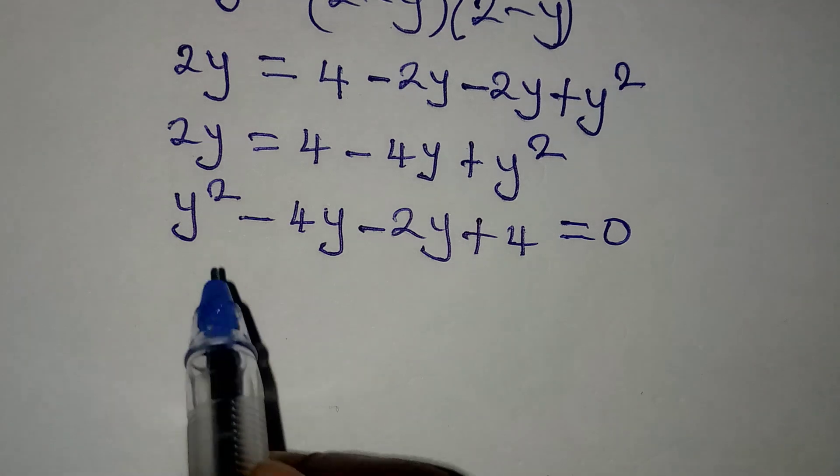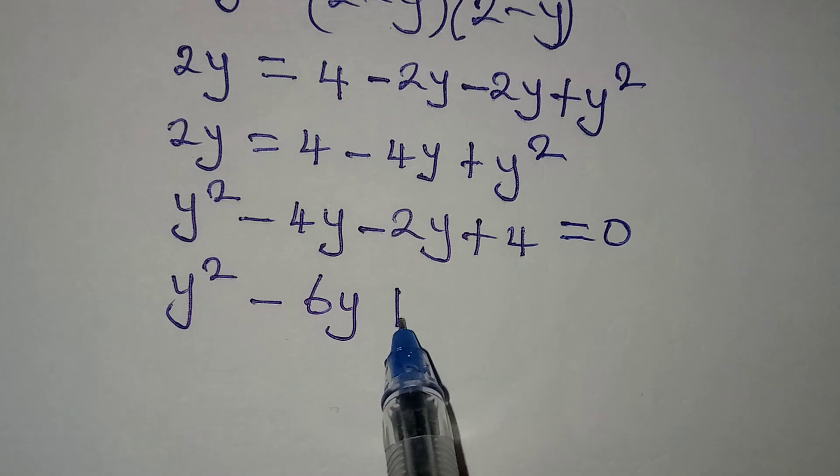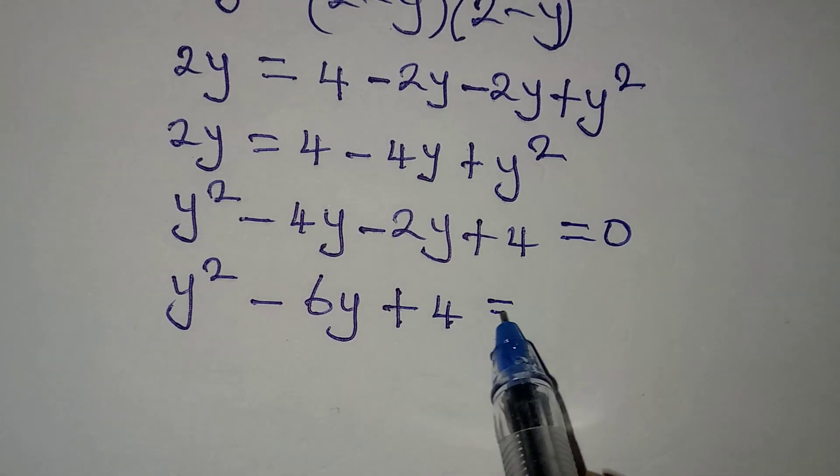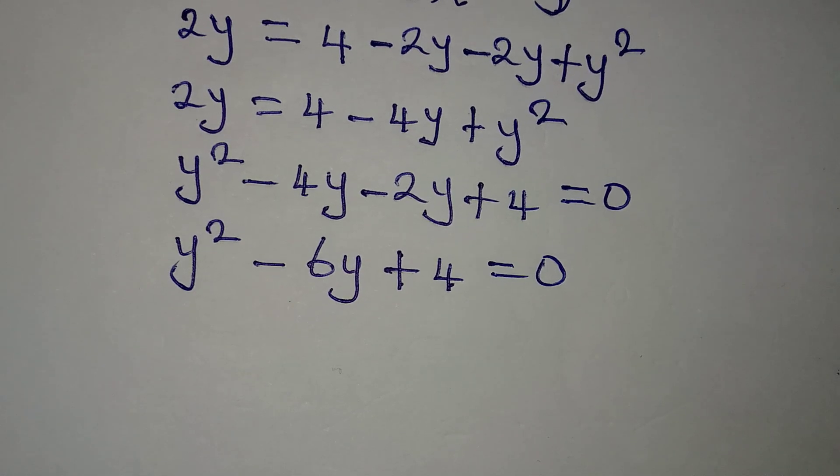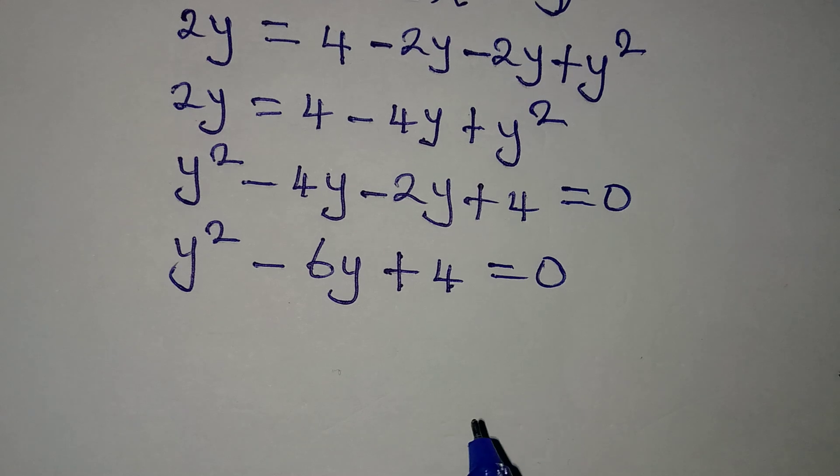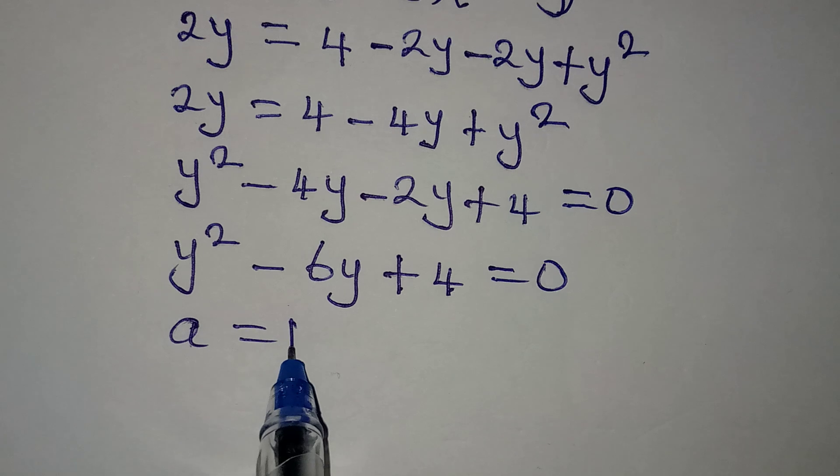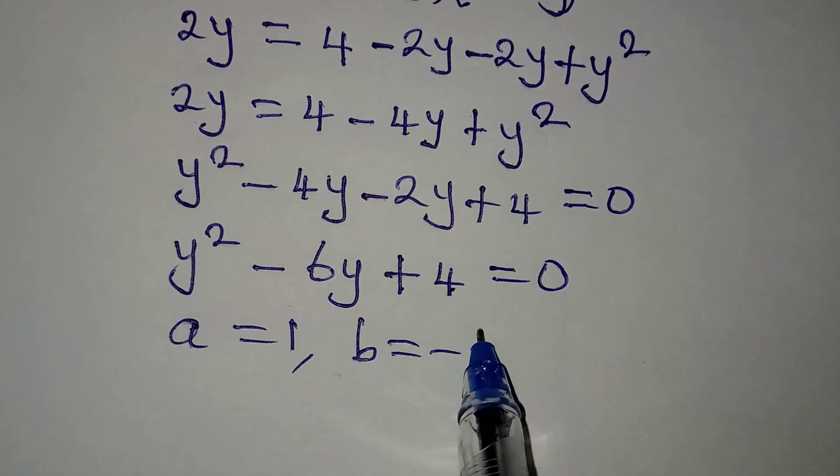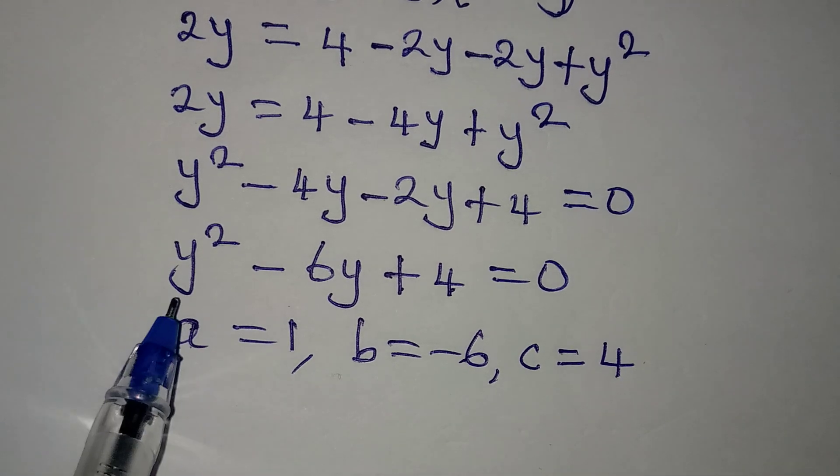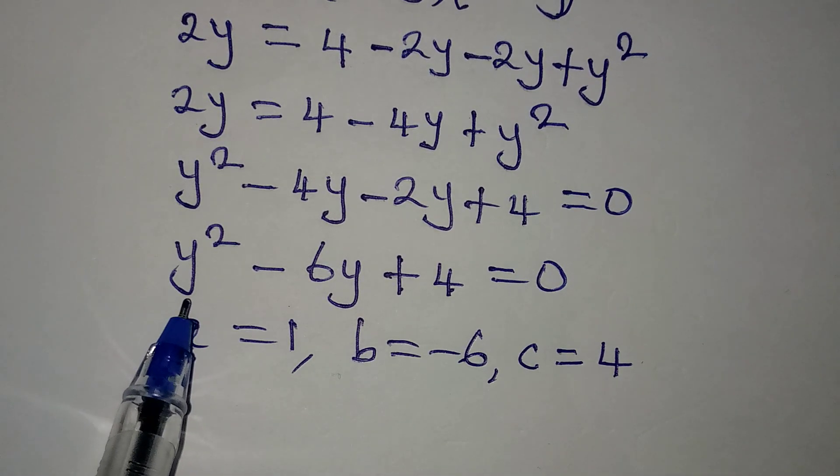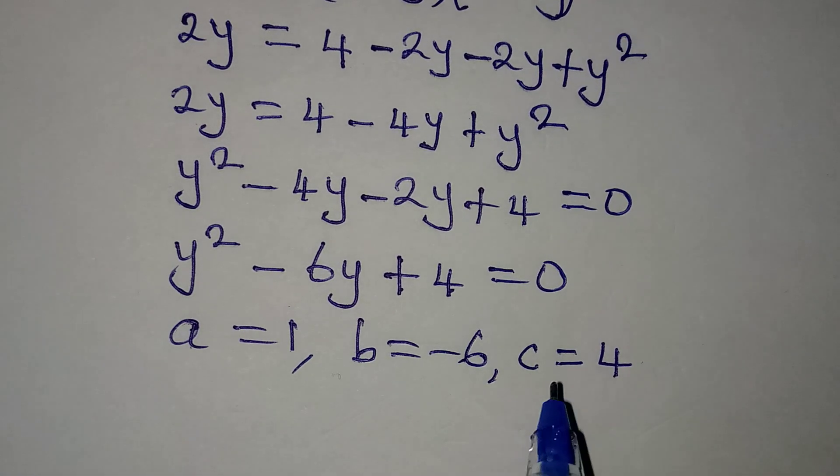So from here, y² - 6y + 4 will be equal to 0. Now we have a quadratic equation and we can solve this by using the formula method. If we are using the formula, then our a will be 1, our b will be -6, and the c will be equal to 4. Remember that a is the coefficient of y², b is the coefficient of y, and c is the constant.